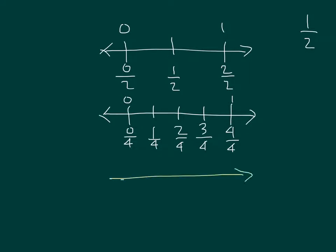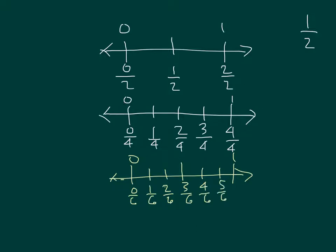Similarly, if we had divided this into sixths — so this is 0 and this is 1 — we would have 0 sixths, 1 sixth, 2 sixths, 3 sixths, 4 sixths, 5 sixths, and 6 sixths. And still, equivalent to 1 half in this case would be 3 sixths. So 1 half, 2 fourths, and 3 sixths are all equivalent fractions — they all have the same value.